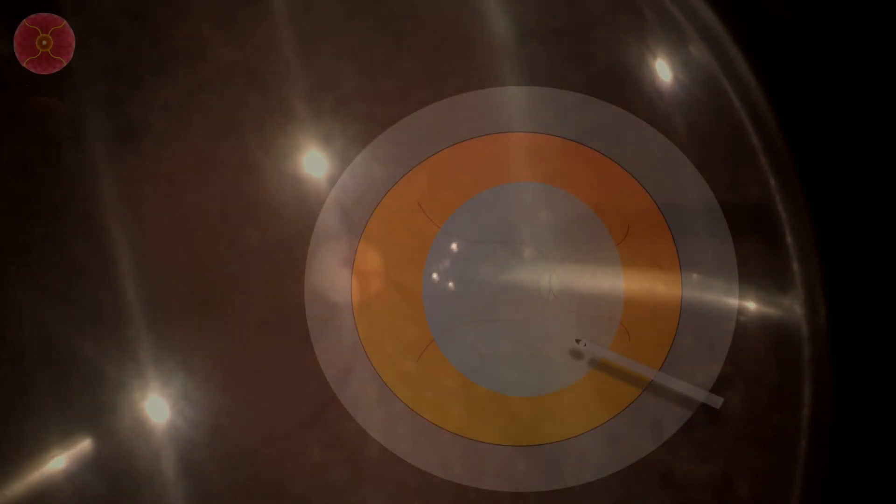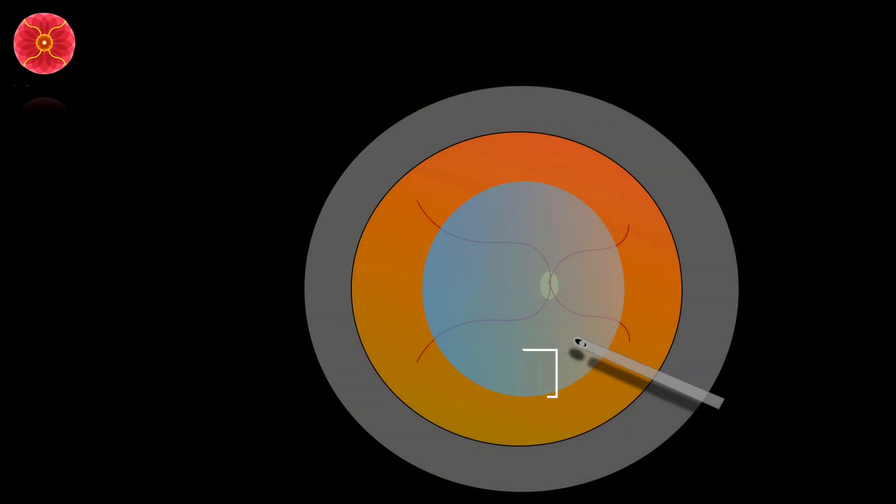During fluid-air exchange, you need to keep your instrument in the liquid interface. Note that as soon as you touch the liquid, the shadow acquires a letter eye shape with a dot above the instrument shadow.